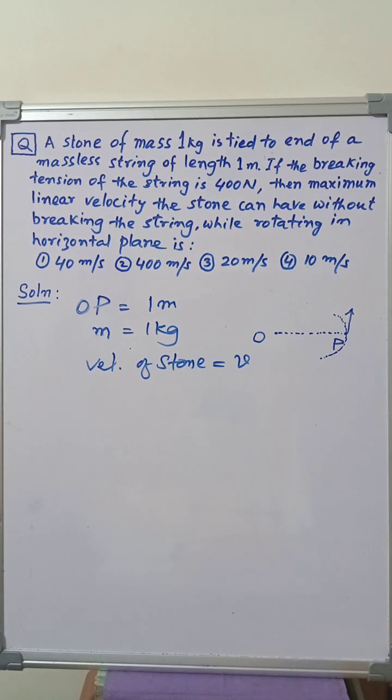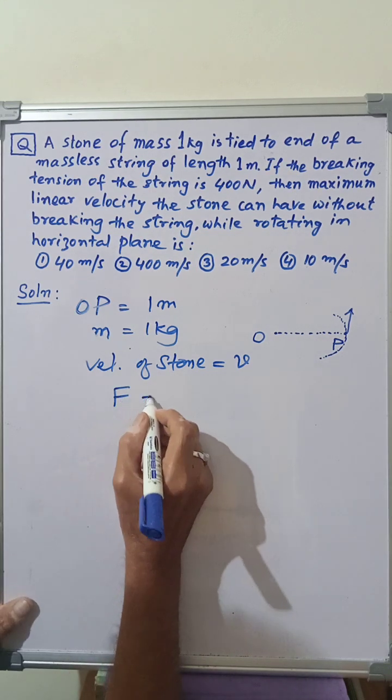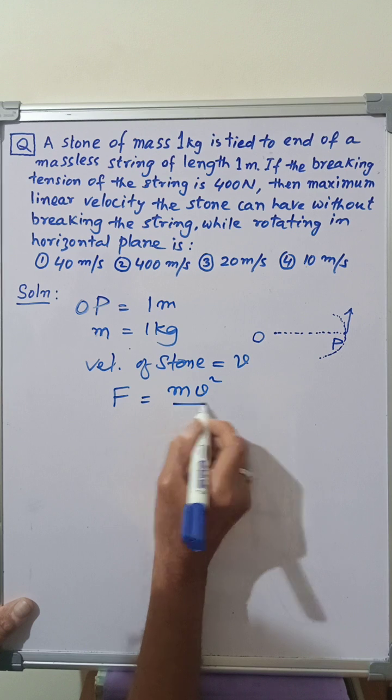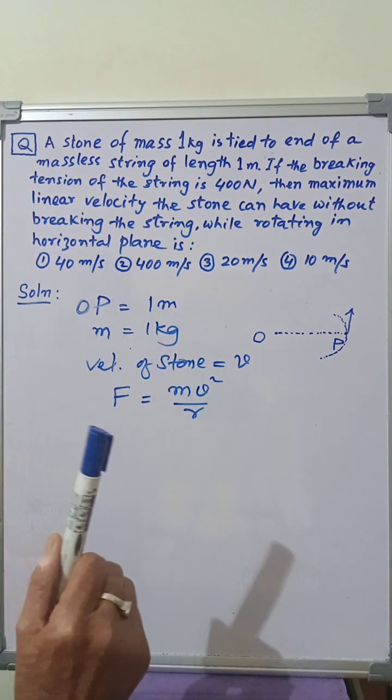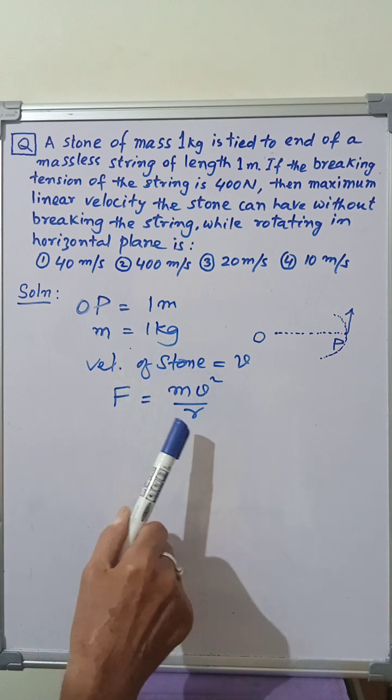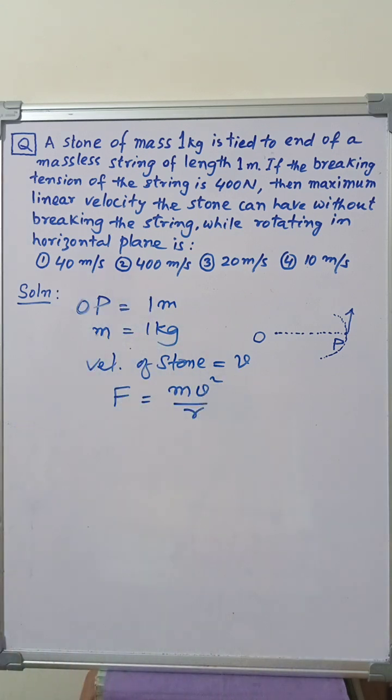for circular motion is given by F is equal to M V square by R, where M is equal to 1 kg and R is equal to 1 meter and V we want to find out.